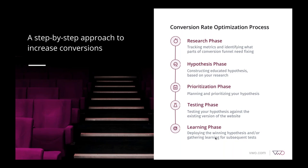A typical conversion optimization process starts with understanding what the user is doing on the website and what the problem areas are. In the research phase, we try to find out what is wrong by defining business goals and funnels, and why it's wrong by visualizing the user journey. Once we have observations, we use that data in the hypothesis phase, where we define the problem and solution based on our research.